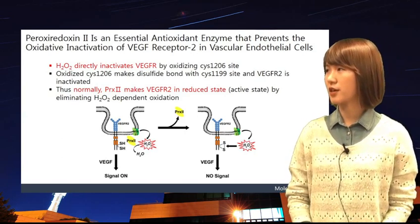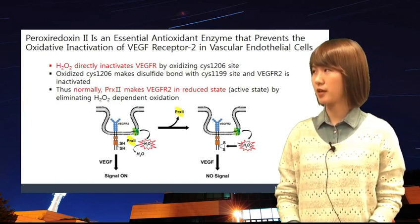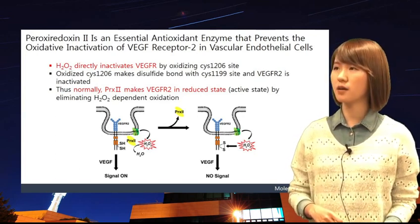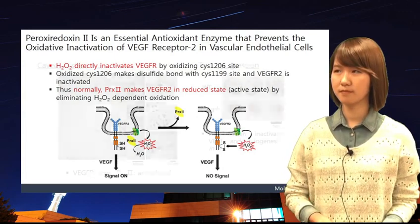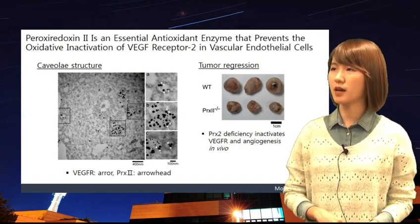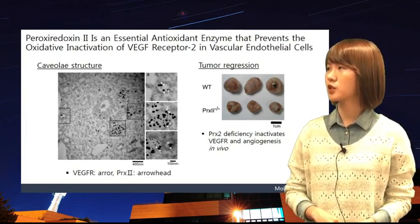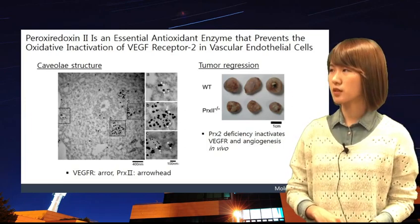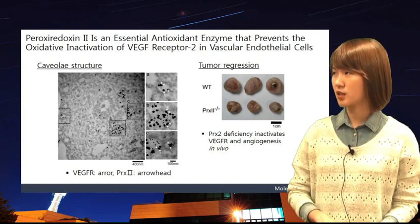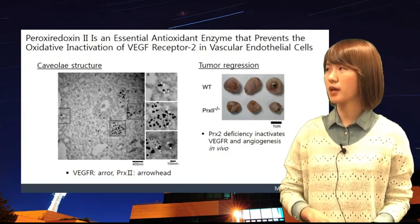The interesting thing here is that they form a caveoli structure. Without this structure, PRX2 cannot work properly. They are closely located together, and PRX2 protects VEGFR from oxidation within the caveoli structure. You can see the caveoli structure image with VEGFR and PRX2 in it. They showed tumor regression in PRX2 deficiency: because PRX2 was protecting VEGFR from oxidation, removing PRX2 resulted in oxidation of VEGFR, inactivation of it, thus inactivated angiogenesis and tumor regression.